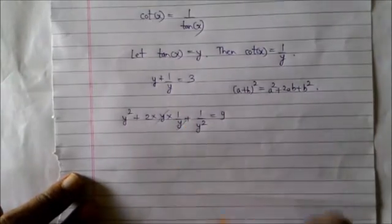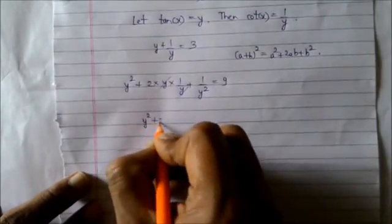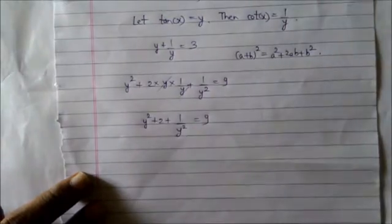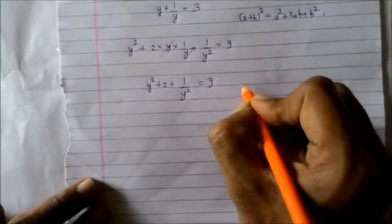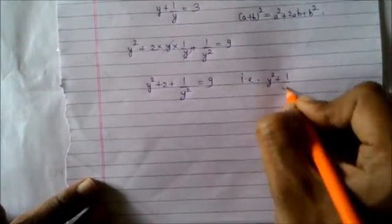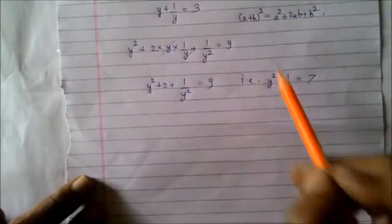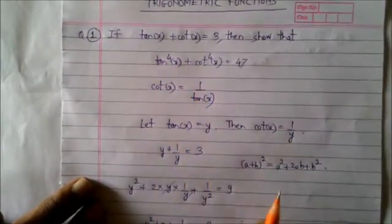Now this y in the numerator and this y in the denominator will cancel. So ultimately I am left with y² + 2 + 1/y² equal to 9. Taking the 2 to the other side, y² + 1/y² equals 7. Now I will apply this formula again to this equation because ultimately I want to find tan⁴x plus cot⁴x.